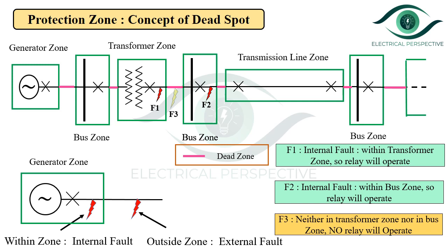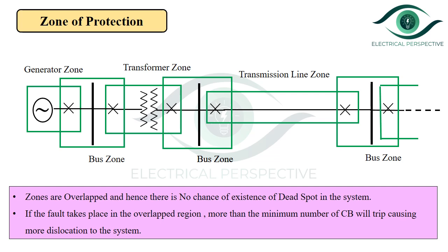No part of the system should be left unprotected. To avoid dead spots, adjacent zones are overlapped so that there is no chance of a dead spot existing in the system — meaning no part of the system will be left unprotected due to overlapping. However, if a fault takes place in the overlap portion, then more circuit breakers get tripped than the minimum necessary to disconnect the faulty element. The extent of overlapping of protective zones is relatively small, and thus the probability of a fault in the overlap region is also very low. Consequently, the tripping of too many circuit breakers will also be infrequent.